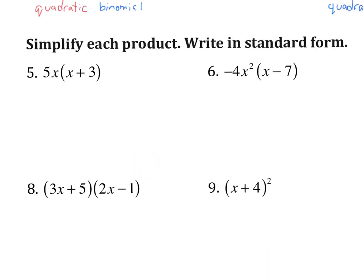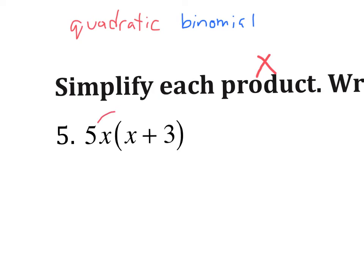The next part that we are tackling is simplify each product. And product, of course, means multiplication or the answer to a multiplication problem. And we're going to write in standard form. So in this first problem, number 5, what we do is take our 5x and distribute. So I get 5x squared. And then we distribute it to the last term as well to get 15x. Now I see if there's anything to combine. But clearly this is a quadratic. This is a linear because of the power of 1. So they do not combine. And that's my answer.